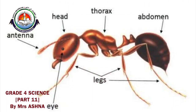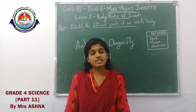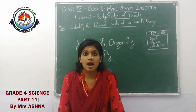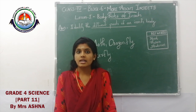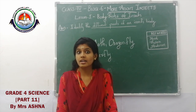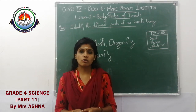This image shows the body parts of an insect. Look at this picture. What are the body parts you can see? Head, thorax, abdomen, then eyes, antennae and legs. Insects have six legs, one pair of antennae, and two eyes. These are the body parts of an insect.